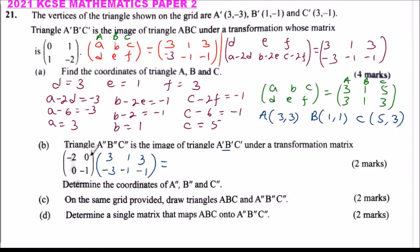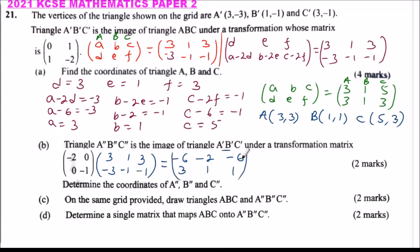Multiplying: -2 × 3 + 0 × (-3) = -6; -2 × 1 + 0 × (-1) = -2; -2 × 3 + 0 × (-1) = -6. For the second row: 0 × 3 + (-2) × (-3) gives the corresponding values, giving us -6, -2, -6 in the first row and the second row results.